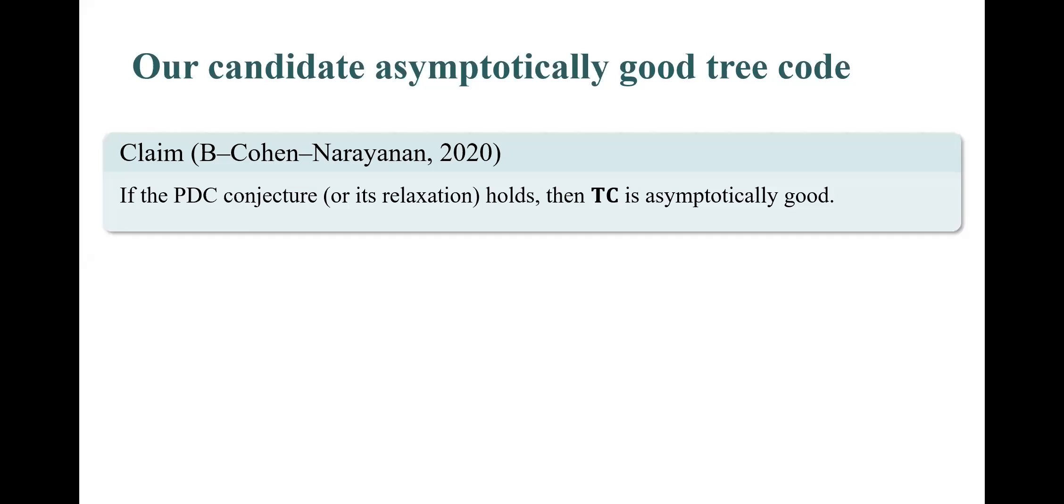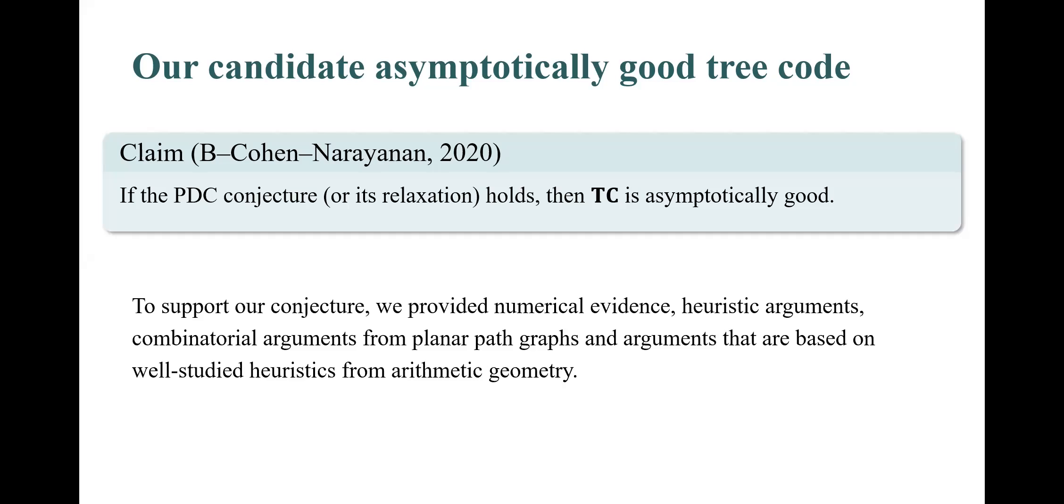In our paper, we prove that if the PDC conjecture or its relaxation holds, then TC is asymptotically good. To support the conjecture, we provide numerical evidence, heuristic arguments, combinatorial arguments from planar path maps, and arguments that are based on well-studied heuristics from arithmetic geometry.